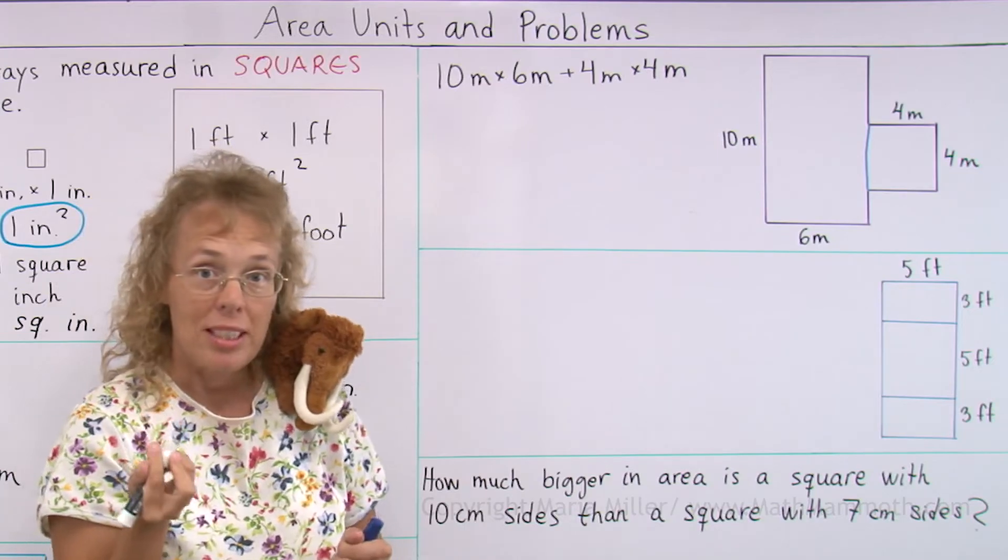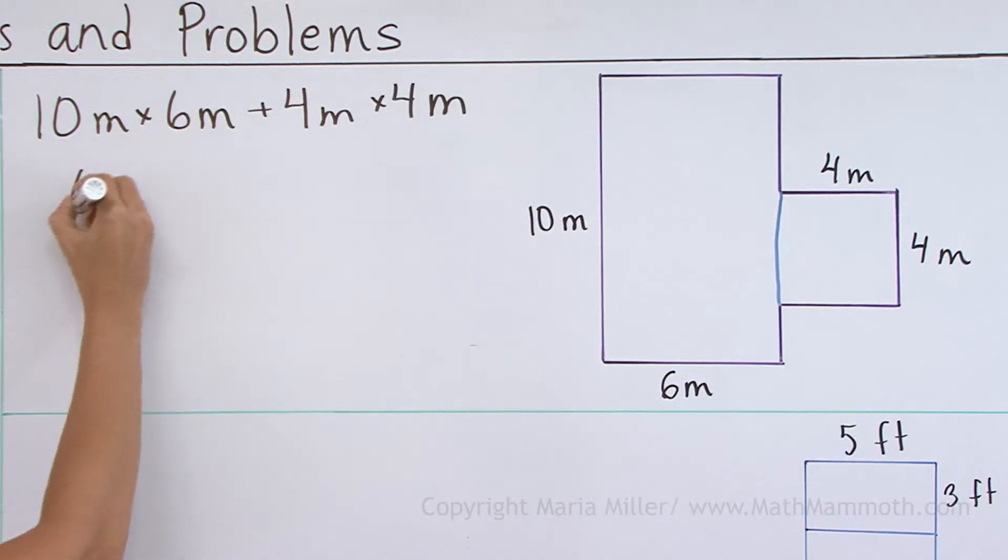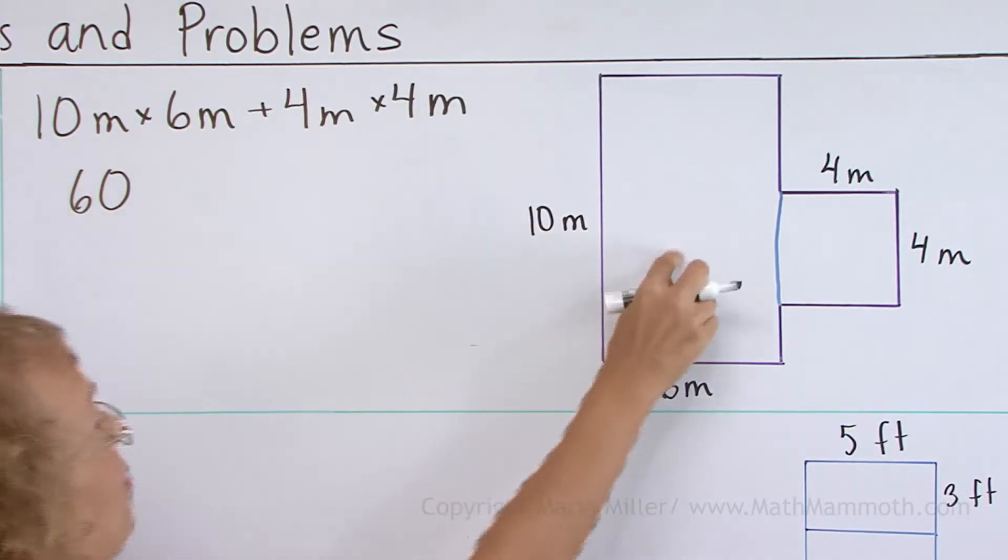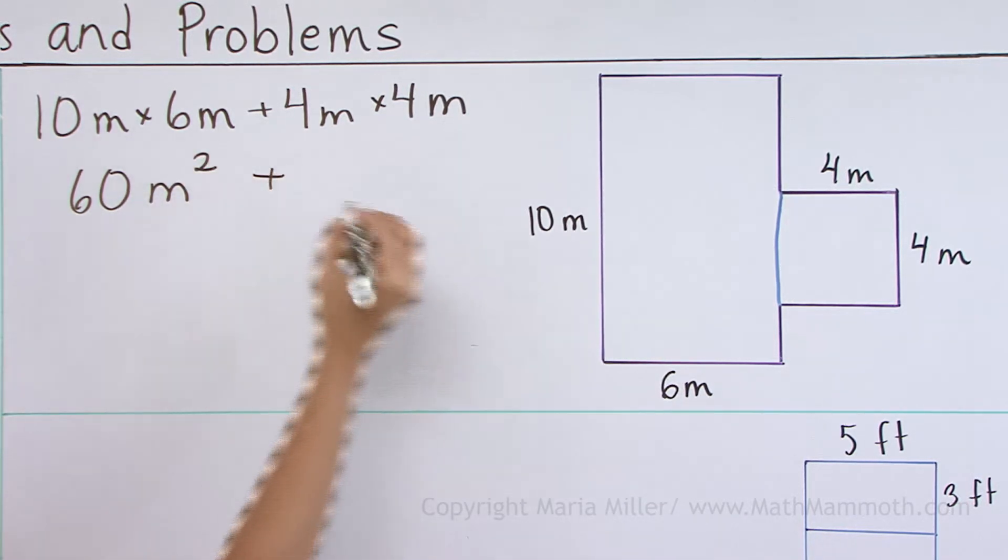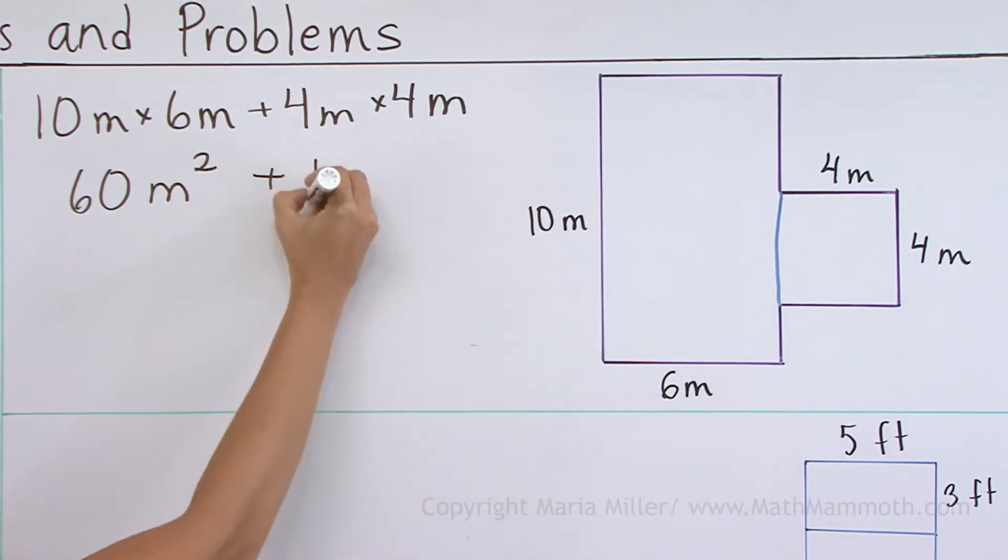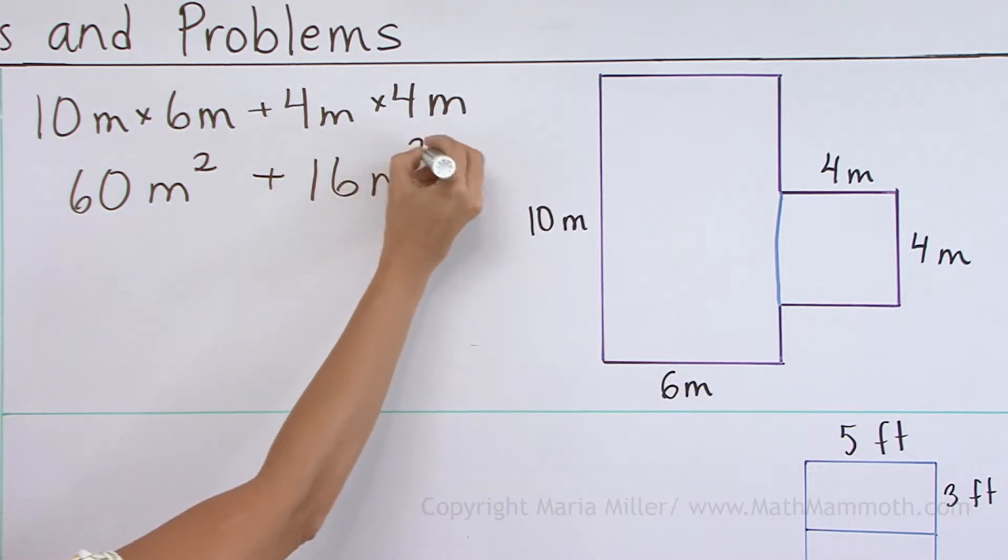And those are added. And then 10 times 6, we get 60. And now that is the area of this part. So the unit here is square meters. And then the area of that part is 16 square meters, like that.